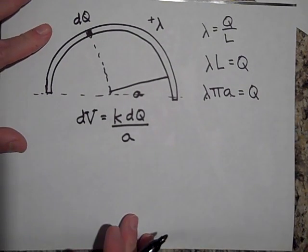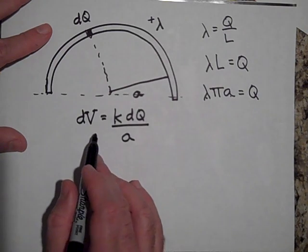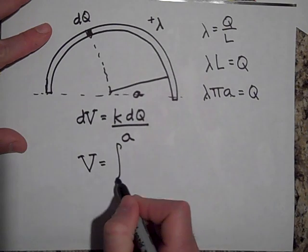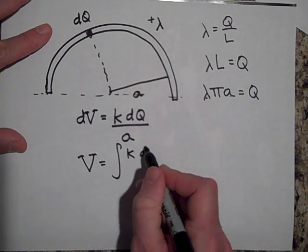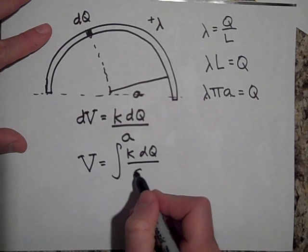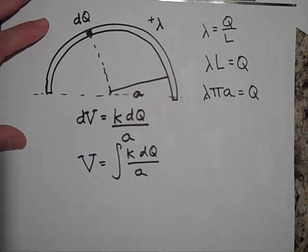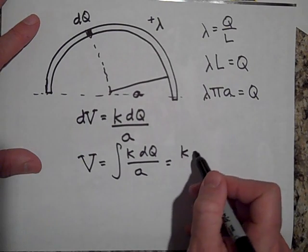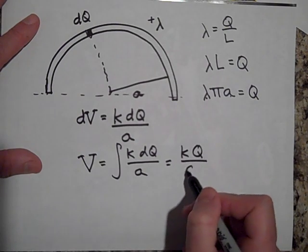Okay, well, let's see. I want to get the total voltage then. I'm just going to sum up all these k dqs over a. When I do that I can pull the k out and the a out and I'm just left with k q over a.